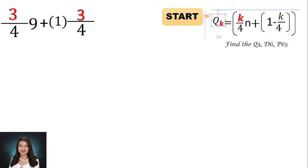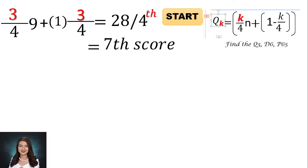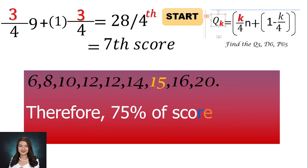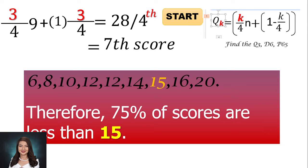If we calculate this, we get 28 over 4, or dividing 28 by 4, we get the 7th score. So in this data, 75% of scores are less than or equal to 15. Just remember that in quartile, Quartile 1 represents the 25th percent, Quartile 2 represents the 50th percent, and Quartile 3 represents the 75th percent. Therefore, we interpret the 7th score as: 75 percent of scores are less than or equal to 15.